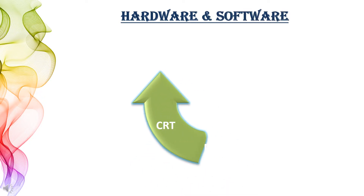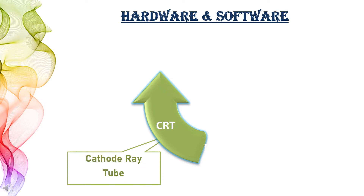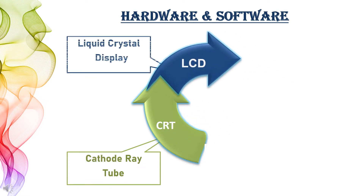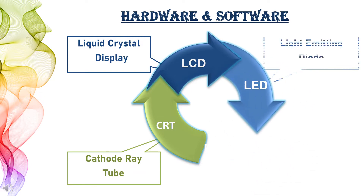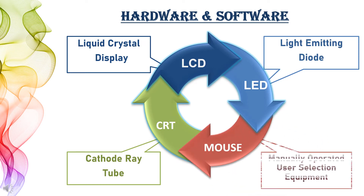Here are some words related to hardware and software of a computer system. CRT: Cathode Ray Tube. LCD: Liquid Crystal Display. LED: Light Emitting Diode. Mouse: Manually Operated User Selection Equipment.